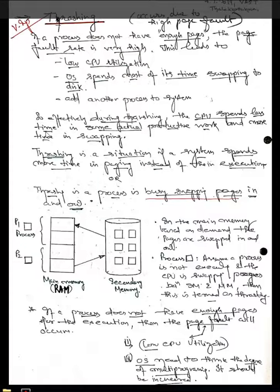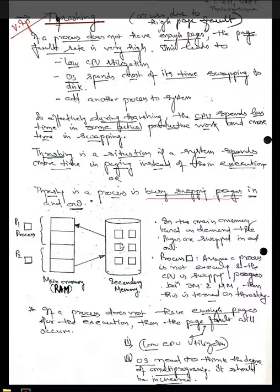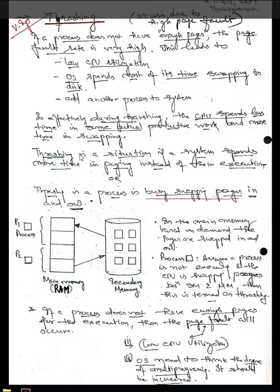During thrashing, the CPU spends less time on actual productive work and more time in swapping. Instead of doing other process activity, the CPU keeps searching for a particular file. If that file is needed but is not traceable, the CPU will keep searching until it is found. Thrashing is a situation where you spend more time in paging instead of executing.